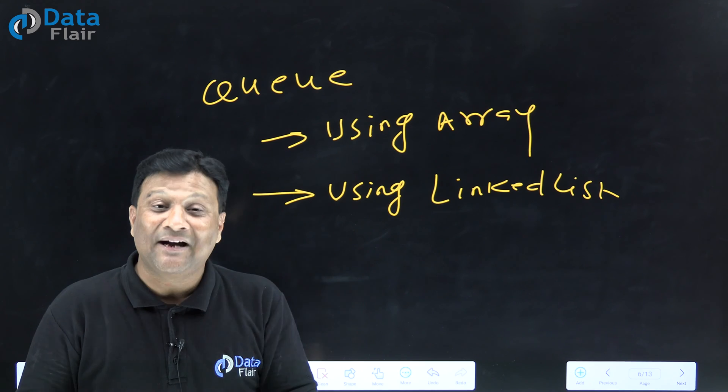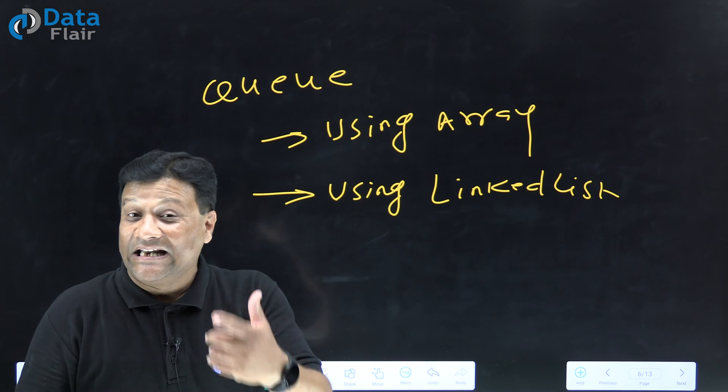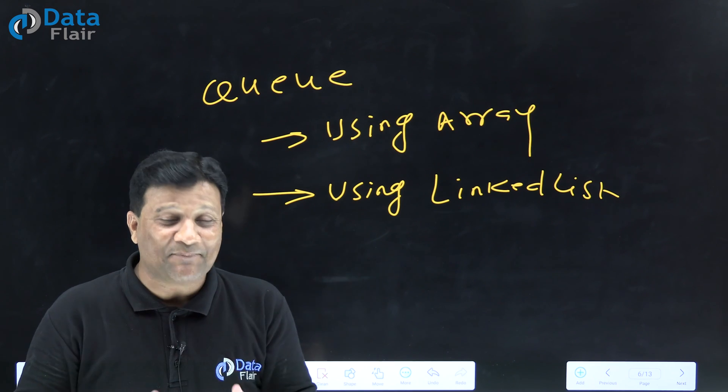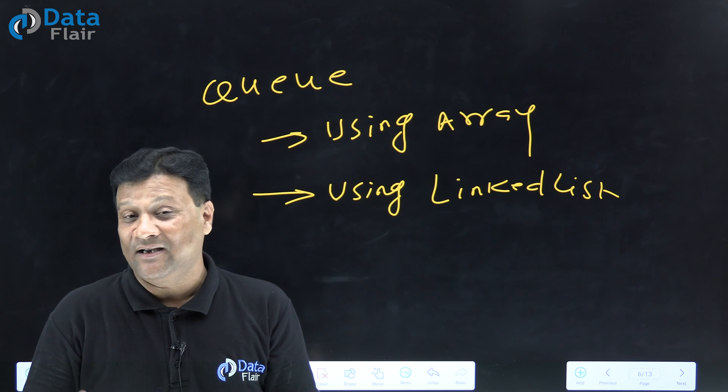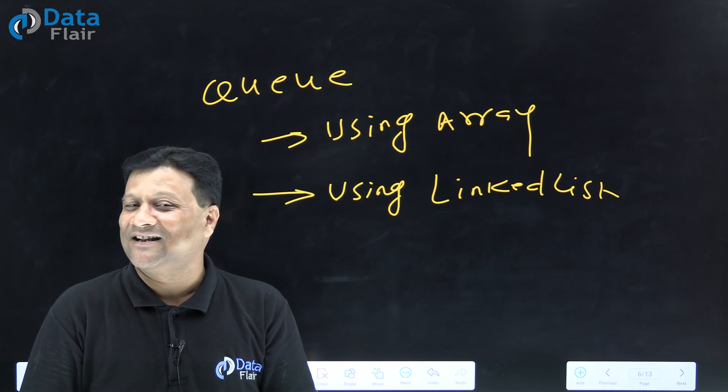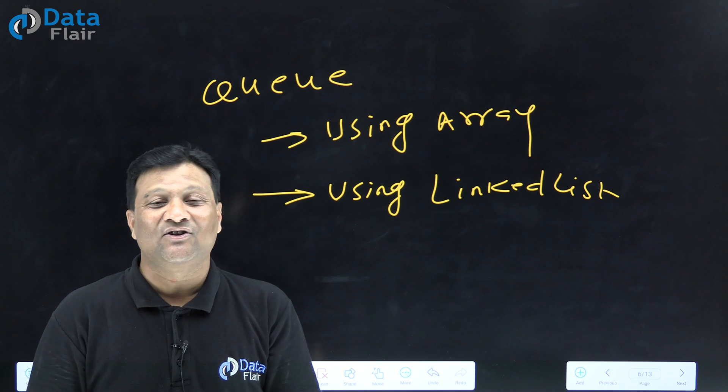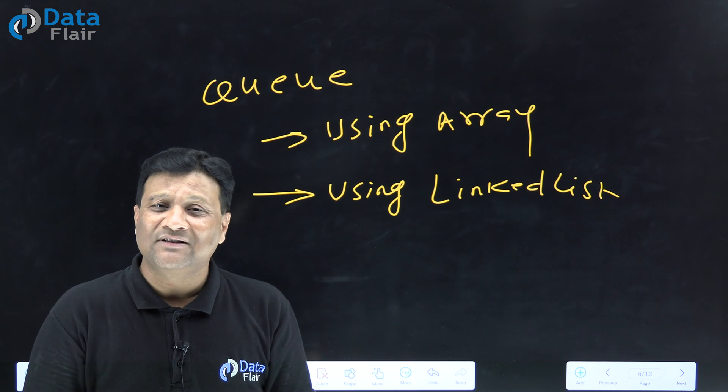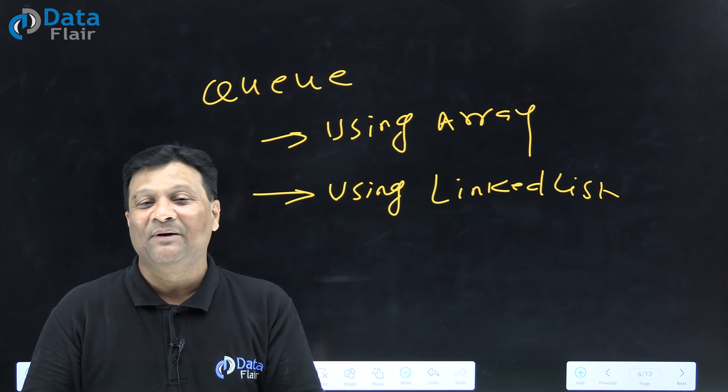Same concept we saw with Stack - Stack using array, Stack using linked list - static data structure and dynamic data structure. We will implement Queue with the same concept. In the next phase, first phase - I hope you understood Queue, Queue applications, and Queue concept. How to implement Queue in data structure. In the next lecture, we'll see implementation of Queue using array, then using linked list, and we'll see all these concepts with menu-driven applications and practical implementations.